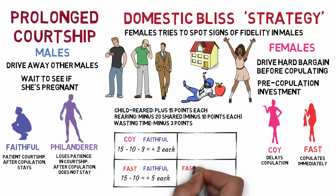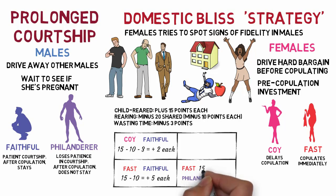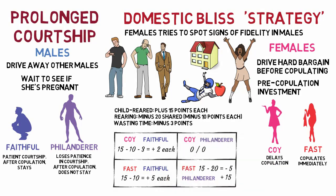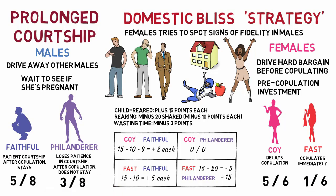However, if fast females start to dominate, philanderer males rise in the population and do better than faithful rivals. The payoff for a fast female becomes 15 minus 20, equaling minus 5 points, while the philanderer male gains plus 15 points. This scenario seems like an endless oscillation, but the system converges on a stable state of 56% coy females and 58% faithful males. The analysis depends on the arbitrary numbers assigned, but the point is that any tendency to deviate from the stable ratio will be penalized, preserving the evolutionarily stable state.